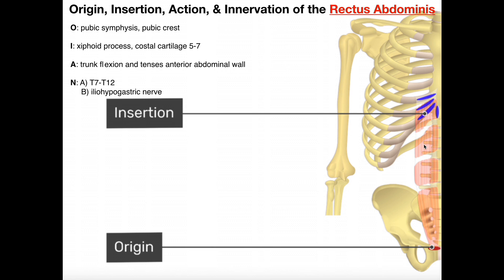So, rectus abdominis — this is, of course, the washboard muscle that is in the middle of the anterior abdominal wall. It's the most medial of all of these. The origin is down here in red: the pubic crest on either side and the pubic symphysis — really just all the structures down here. The fibers tend to move upward toward the insertion. The insertions, shown in blue, are the xiphoid process — that's the inferior part of the sternum — and also the costal cartilages of ribs five through seven.